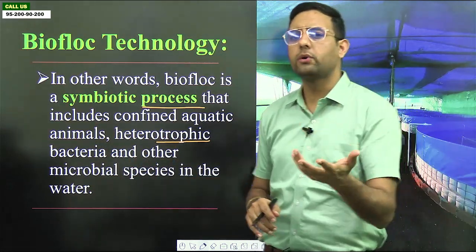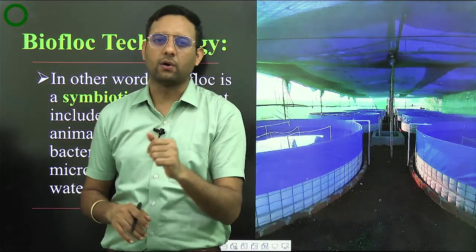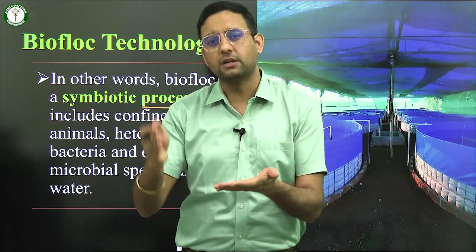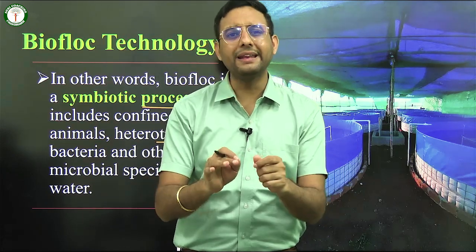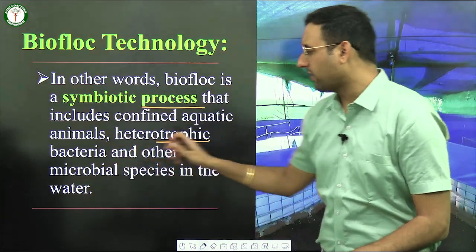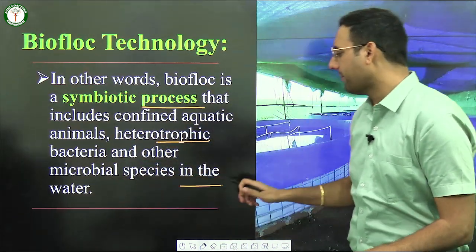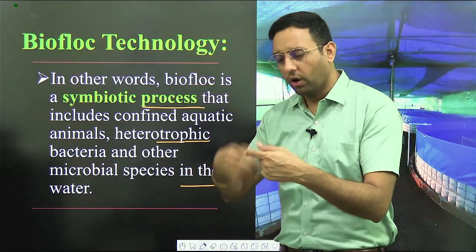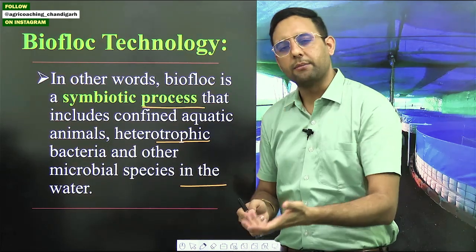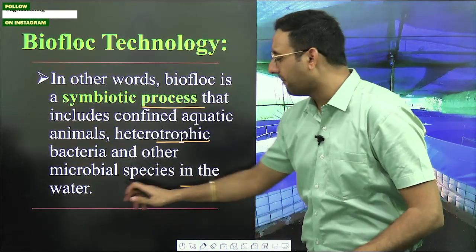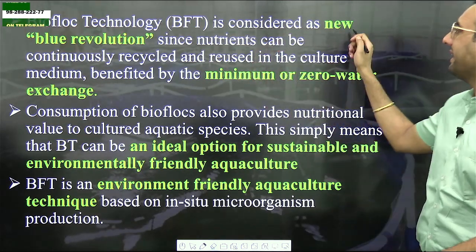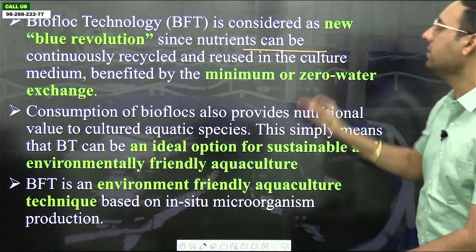There are two types of bacteria: autotrophic, which can make its own food, and heterotrophic, which is dependent on other sources for food. In biofloc, the bacteria are heterotrophic — dependent on fish excreta for food. We rear fish along with heterotrophic bacteria and other microbial species all inside a single pond.